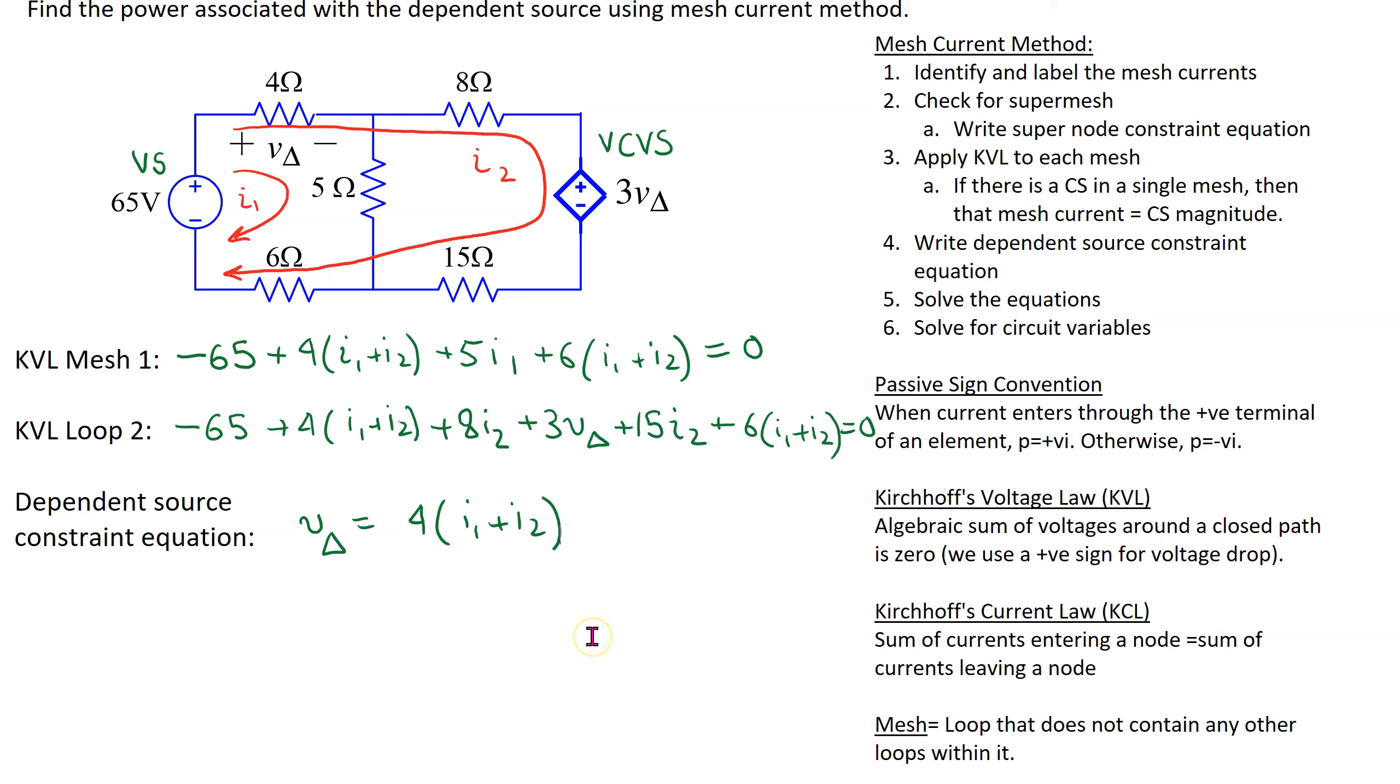Thus we see that we have three equations and three unknowns I1, I2 and V delta. These equations can be solved using a scientific calculator. And we can show that V delta is 16 volts. I1 comes out 5 amps. And I2 comes out minus 1 amp.